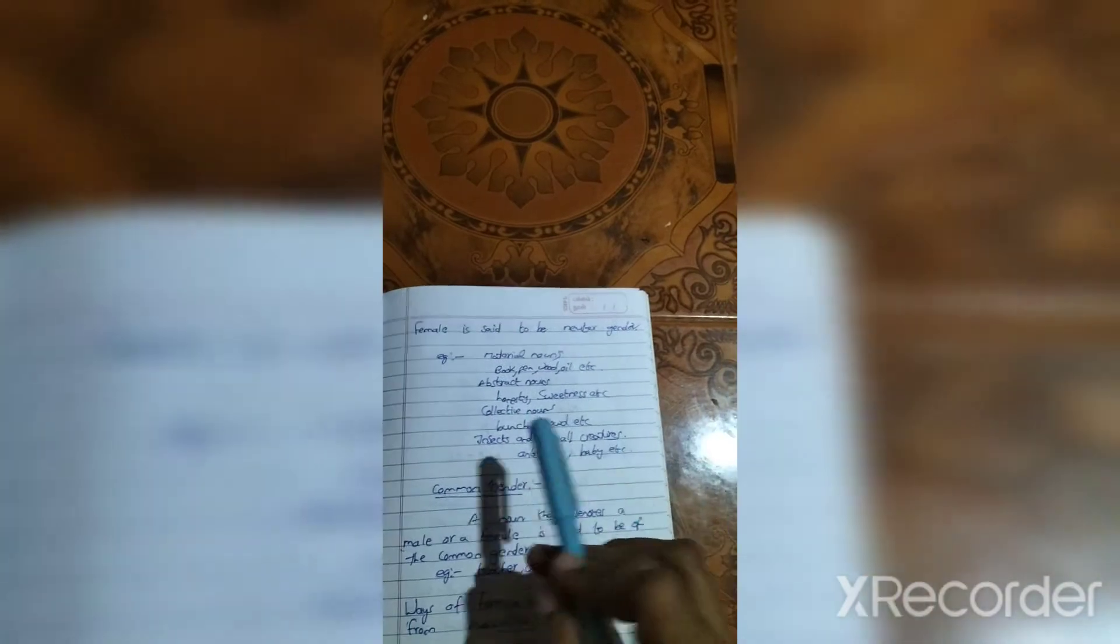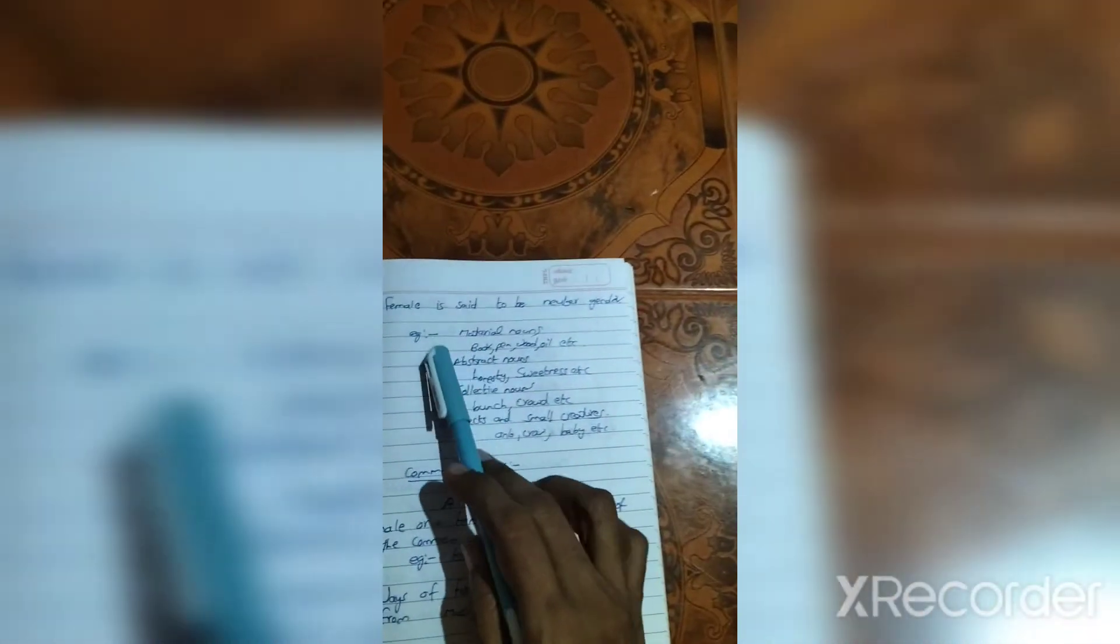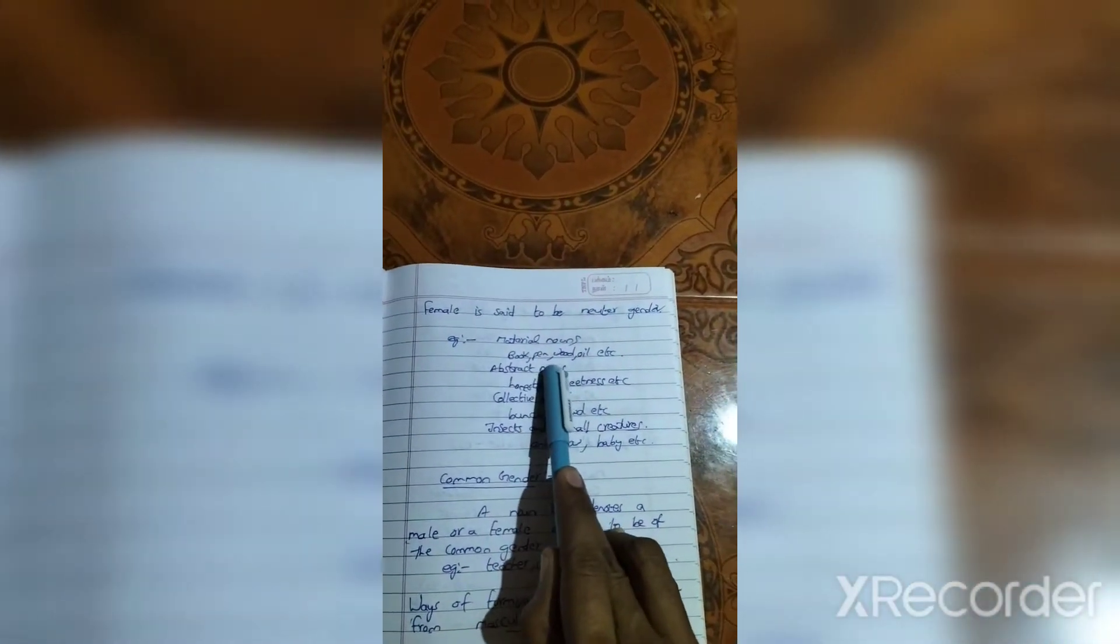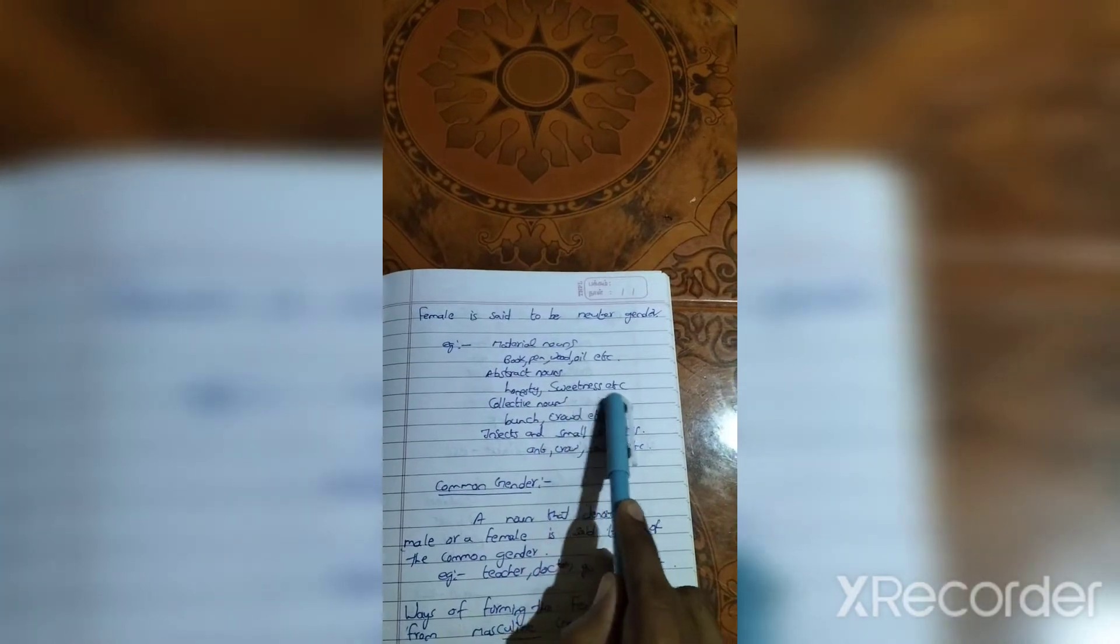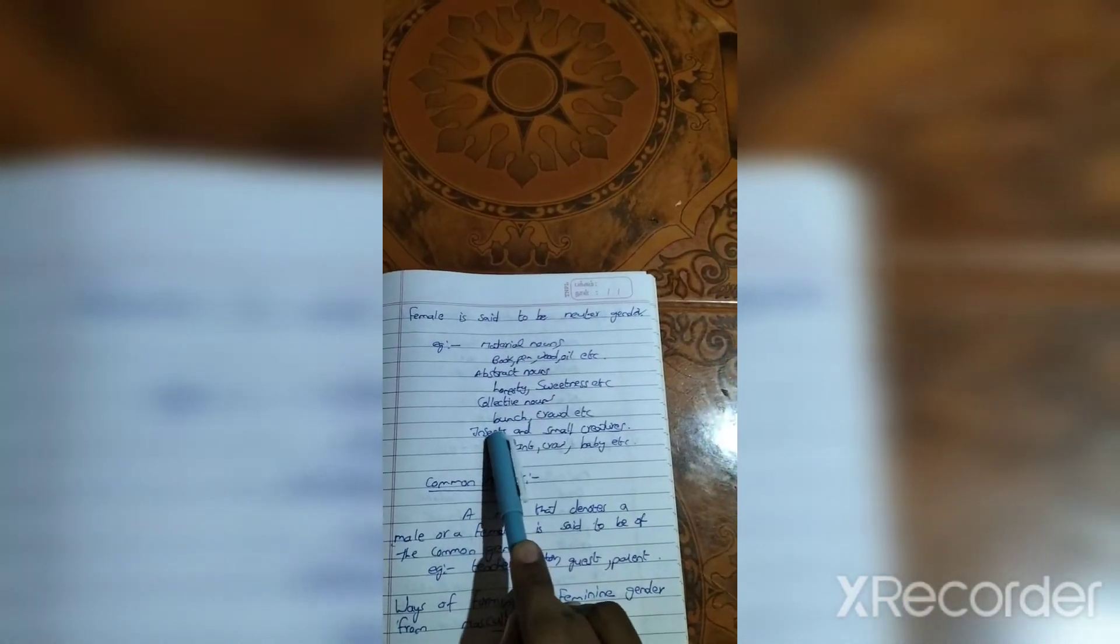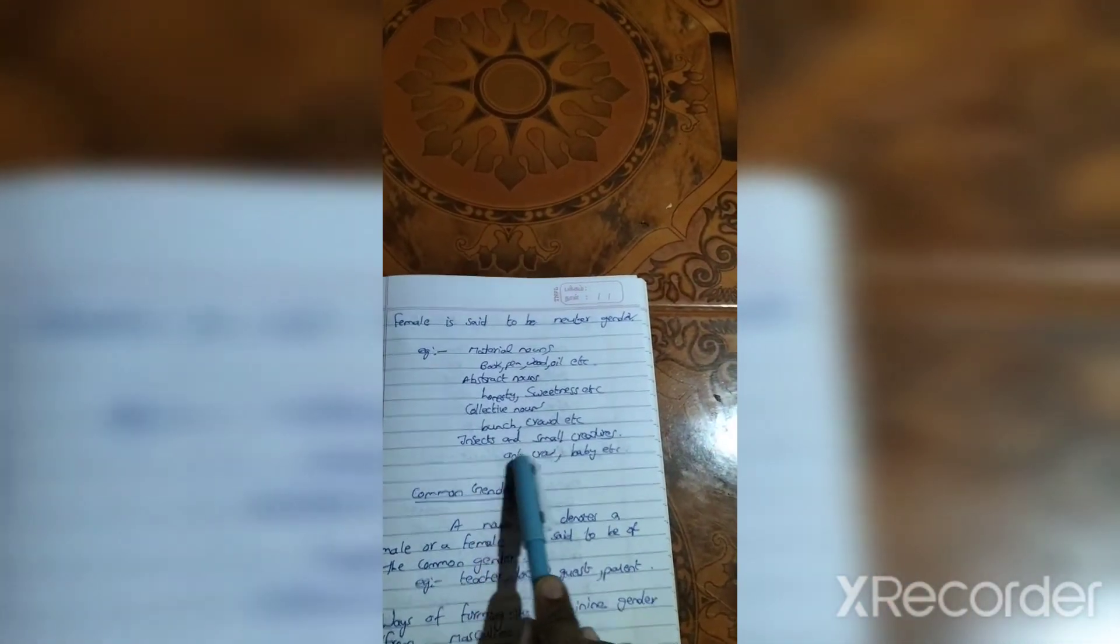Examples: Material nouns like Book, Pen, Wood, Oil. Abstract nouns like Honesty, Sweetness. Insects and small creatures like Ant. Baby.